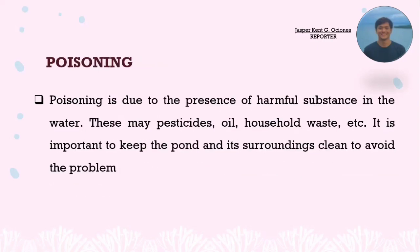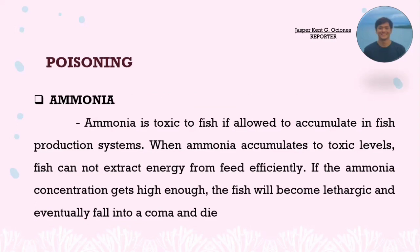Next is poisoning, which is due to the presence of harmful substances in the water, such as pesticides, oil, household waste, and others. It is important to keep the pond and its surroundings clean. Ammonia is toxic to fish if allowed to accumulate in fish production systems. When ammonia accumulates to toxic levels, fish cannot extract energy from feed efficiently, and if the concentration gets high enough, fish will become lethargic and eventually fall into a coma and die.